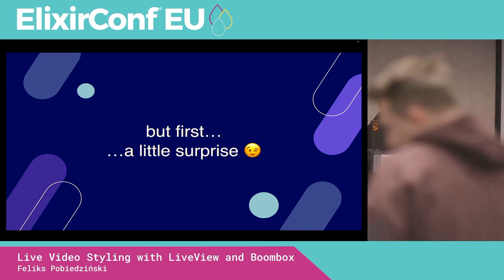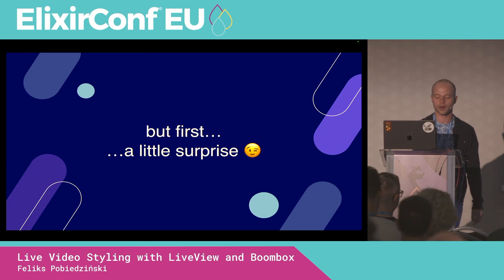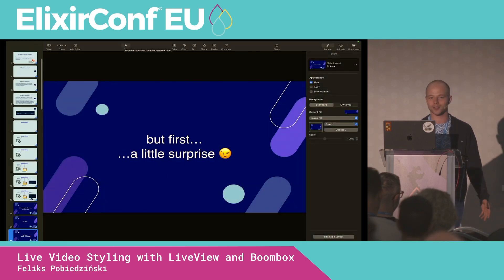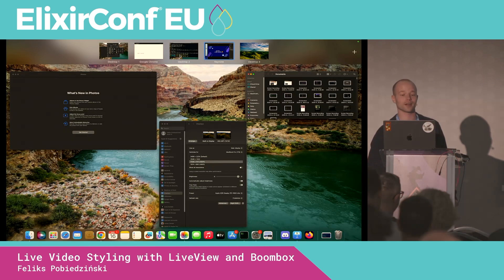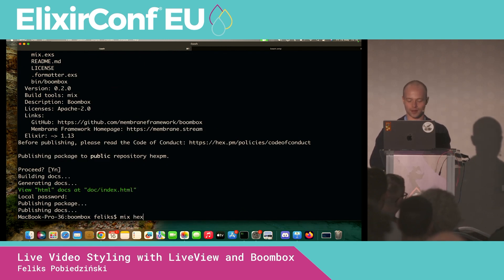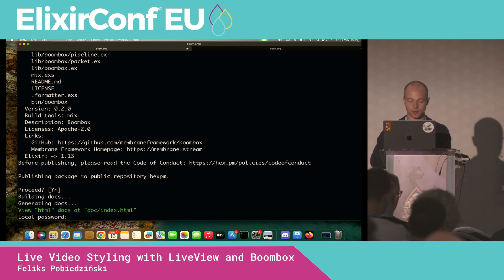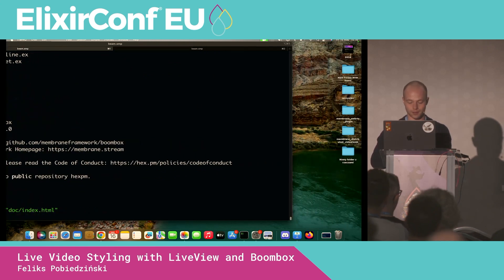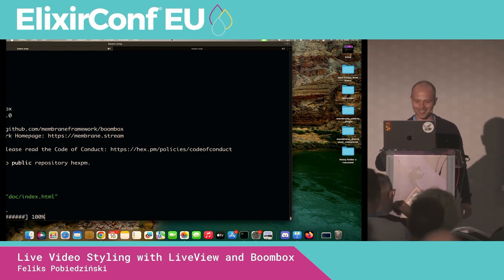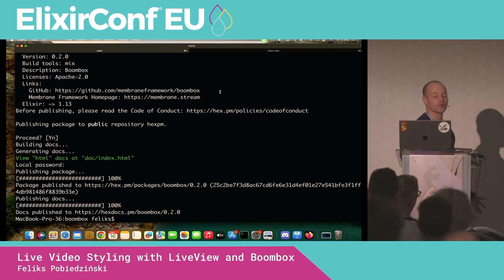I have prepared a little surprise for you. Until now, we have released only one version of Boombox, 0.1.0. But now we have decided to release a second version, 0.2.0, and I will do it right now. I will type mix hex.publish, this time without dry run. And I have to proceed — yes. So Boombox 0.2.0 is now available on hex.pm.